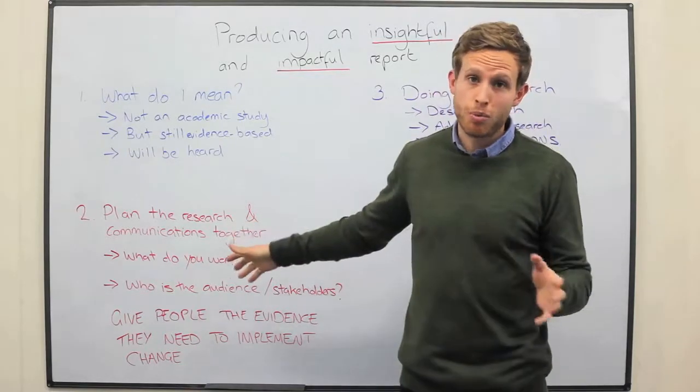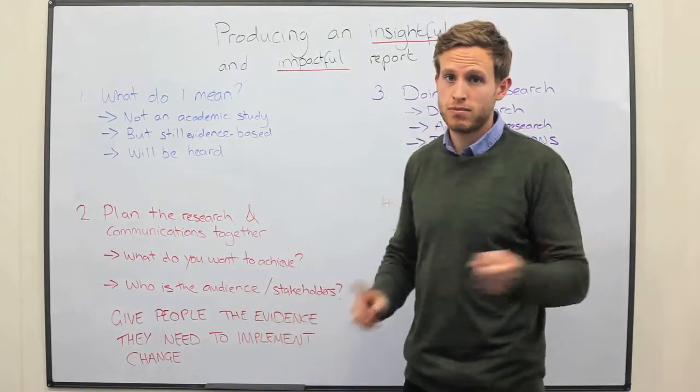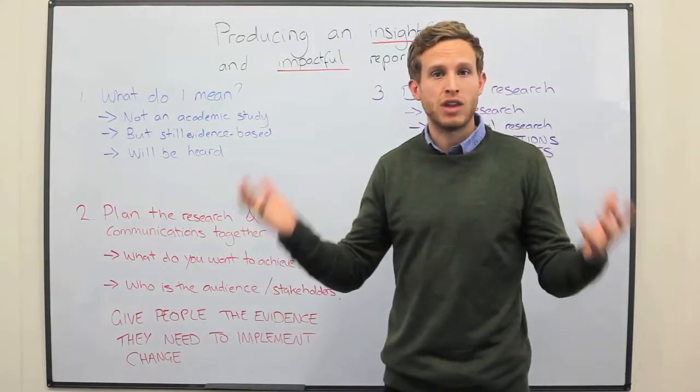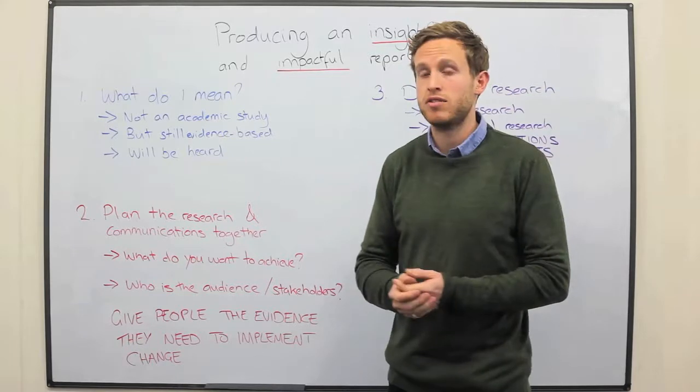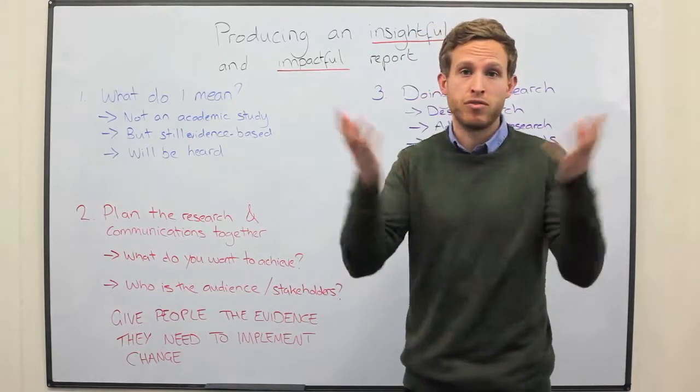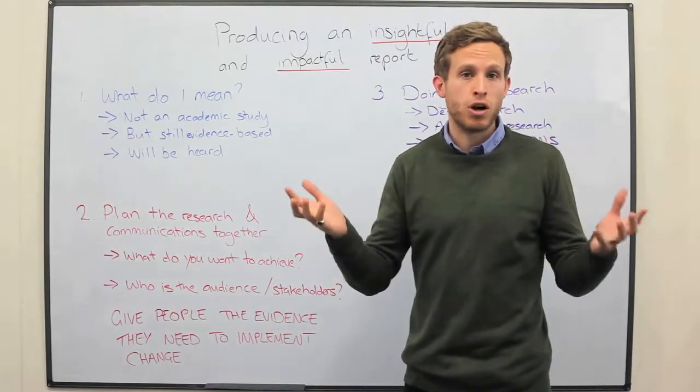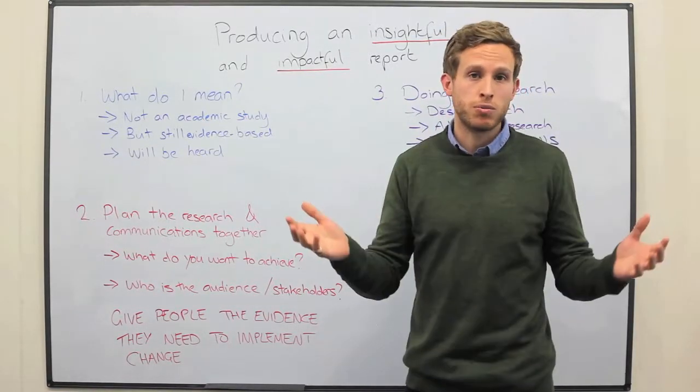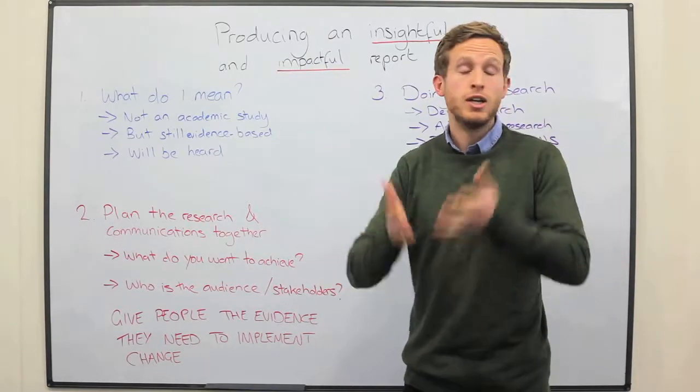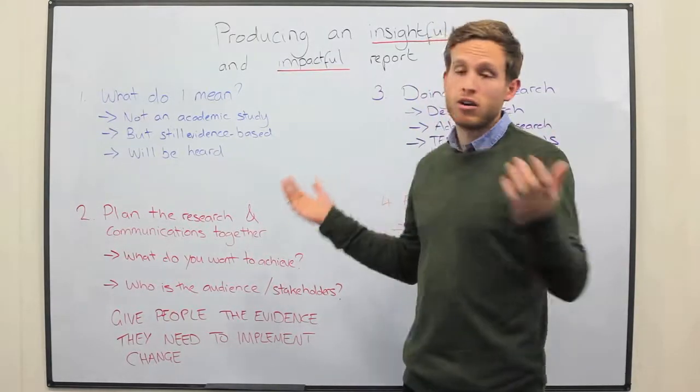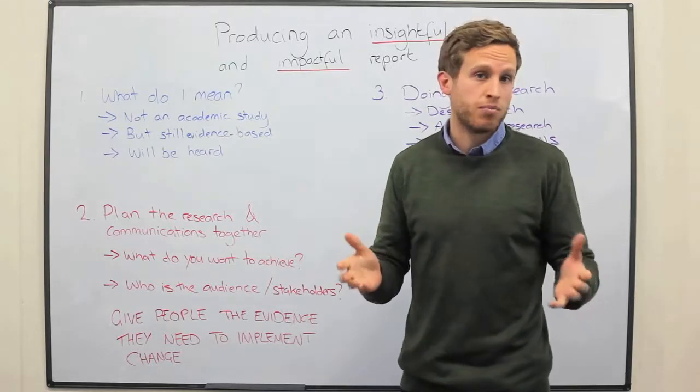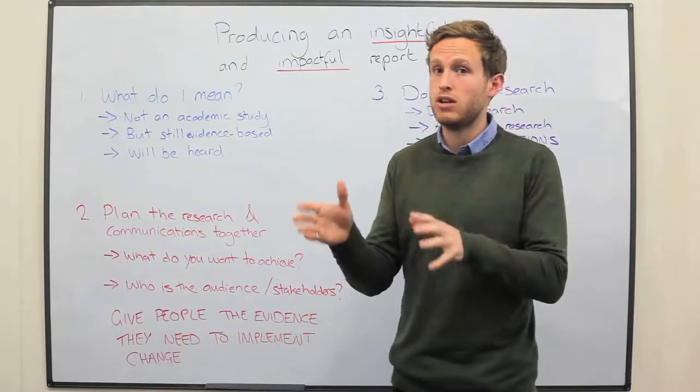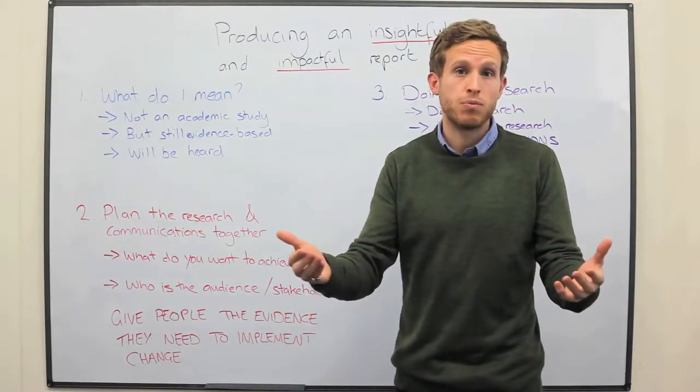So first of all, you start by asking yourself two questions. Number one, what do you want to achieve? What is the change or the impact that you want to achieve? That could be as simple as informing the public of an interesting or important topic. It could be setting yourselves up as a thought leader in your specific industry so that people come to you. Or thirdly, it may be to actually change government policy. These things all inform the way you do your research and how you produce the end product.